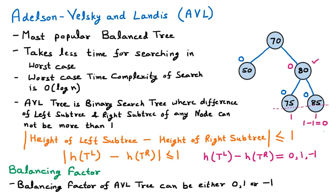Going again from bottom to top, the next node without a balancing factor is node 70. We focus on the left subtree of node 70: on the left-hand side, there is only one level. On the right-hand side, we count the levels: level 1 and level 2, so two levels are present. The balancing factor is height of left minus height of right: 1 minus 2 equals -1. So the balancing factor of node 70 is -1.